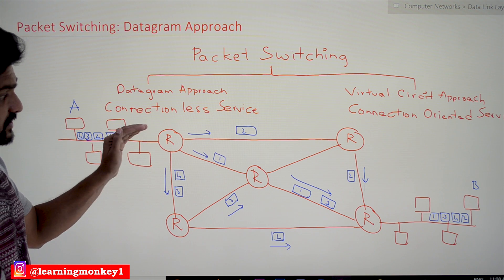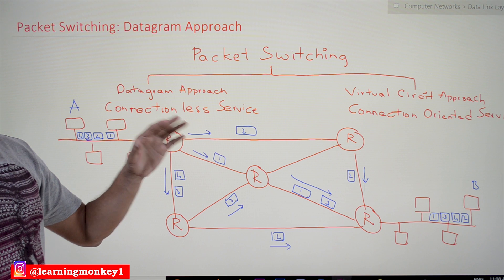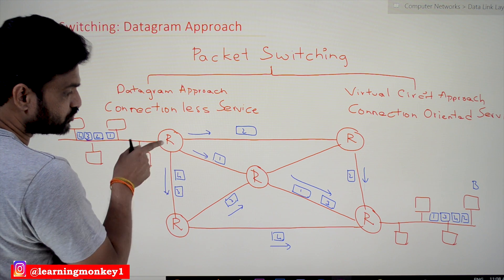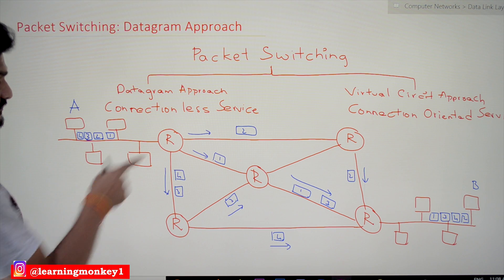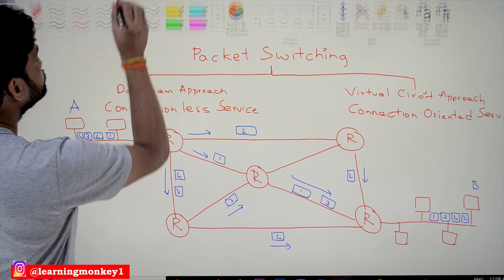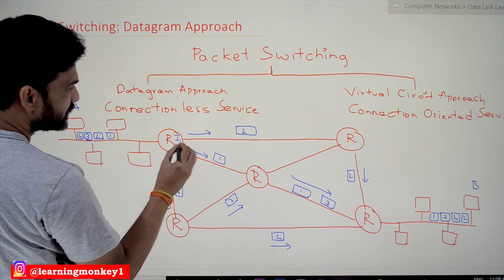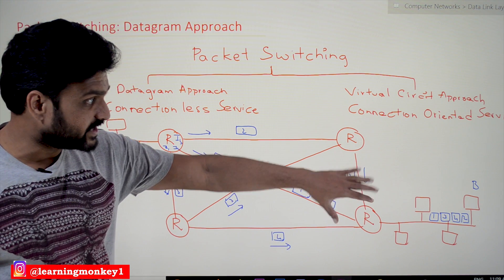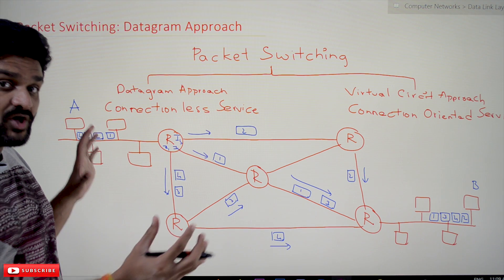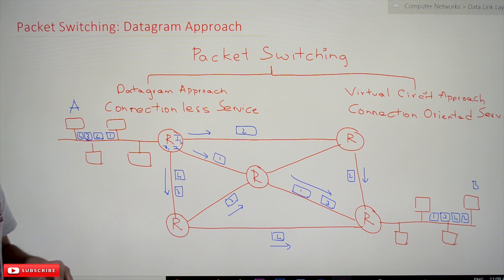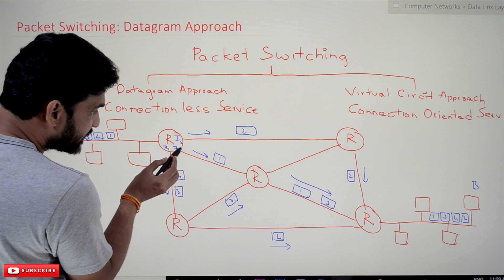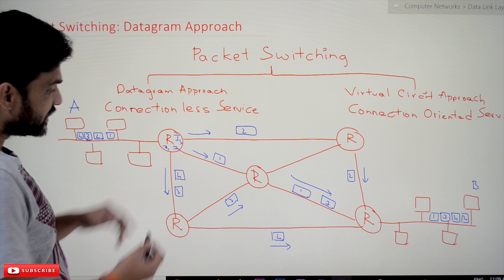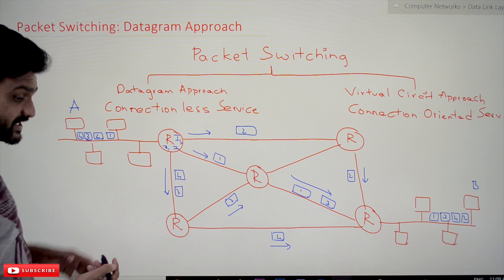In this approach, packets are transmitted randomly into the network. For example, packet 1 is transmitted through interface I2, packet 2 through interface I3, and packets 3 and 4 through interface I1. The packets are routed through different interfaces based on availability.